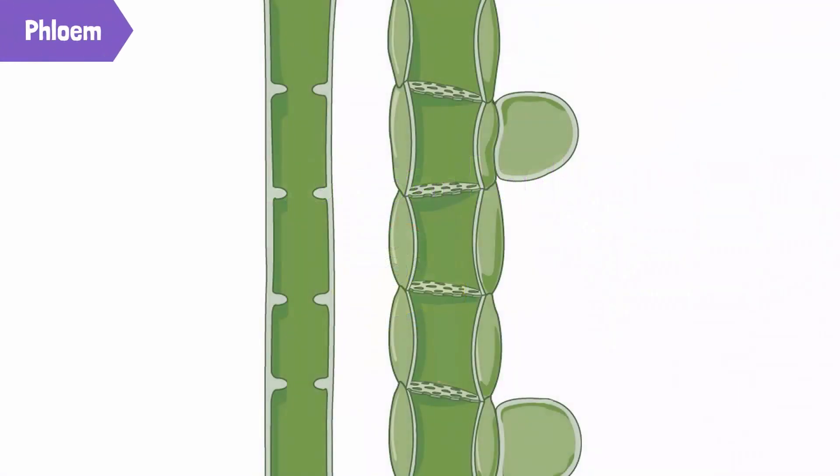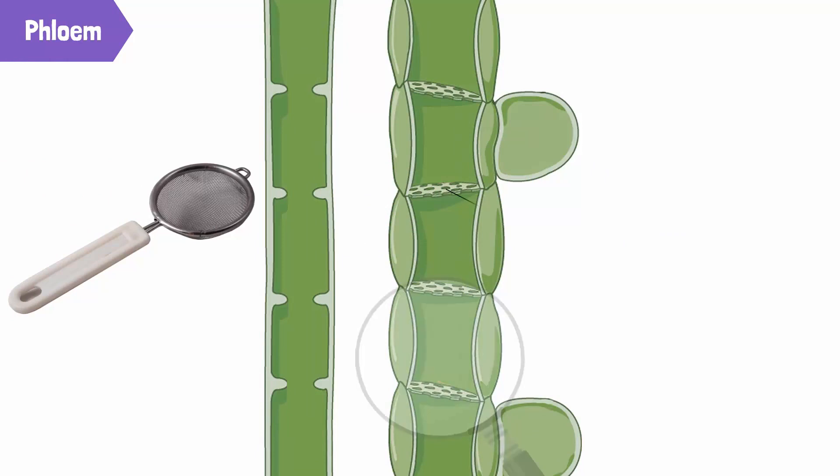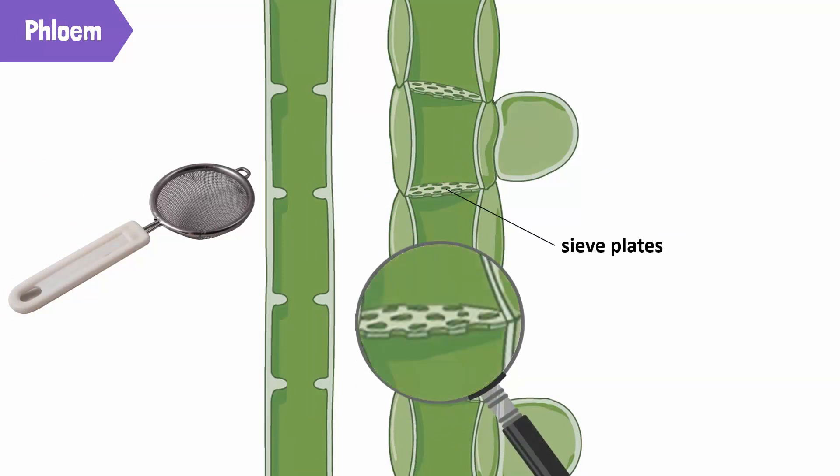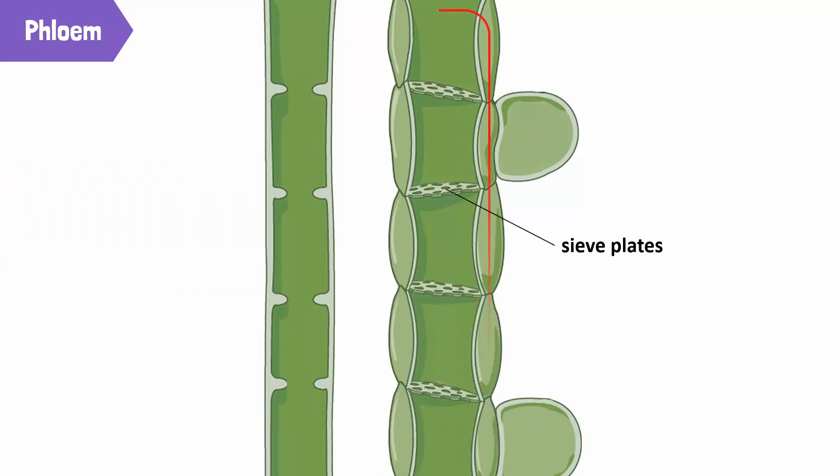Phloem tubes have perforations, much like a sieve. These cross walls are called sieve plates, while the tubes are called sieve tubes. These sieve tubes transport foods such as glucose.